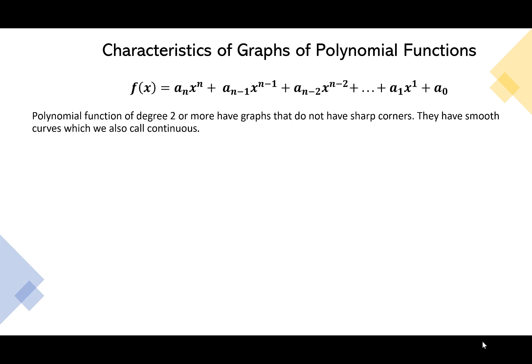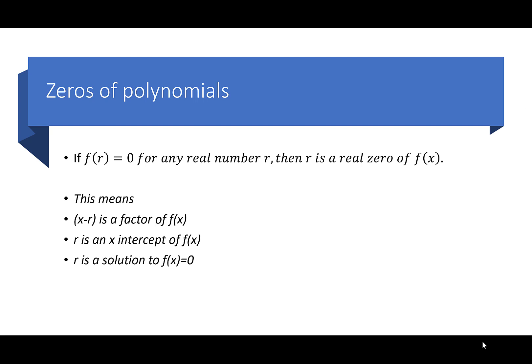There are important points on the function that we want to talk about. Most important would probably be the zeros of the polynomials. If f(r) = 0 for any real number r, then r is a real zero of f(x). This means that (x − r) is a factor of f(x), r is an x-intercept of f(x), and r is a solution to f(x) = 0. We get multiple things out of this one piece of information.